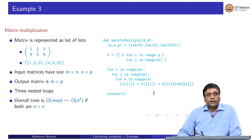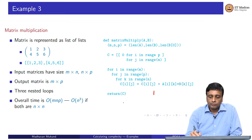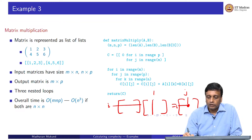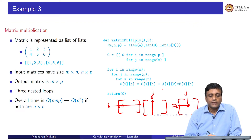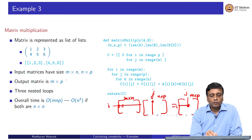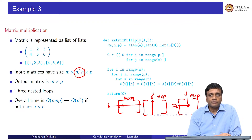Let us look at a more computational example: the problem of matrix multiplication. If we take two matrices of compatible size, to compute element (i,j) of the output, we take row i of the first matrix and column j of the second matrix, and multiply pairwise every element a[i][k] with b[k][j]. If the first matrix has m rows and n columns, and the second has n rows and p columns, then the output is going to have m rows and p columns. The number of columns of the first matrix must equal the number of rows of the second matrix.